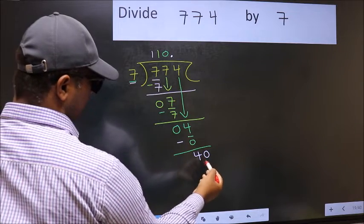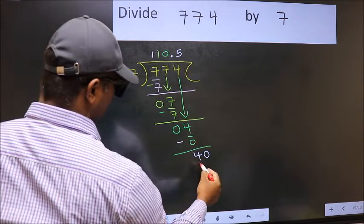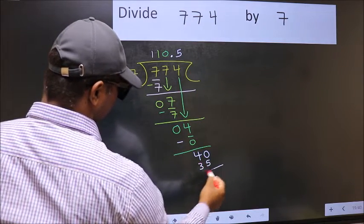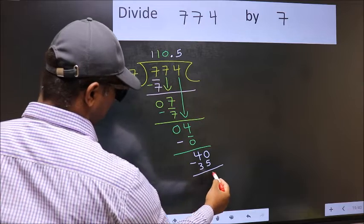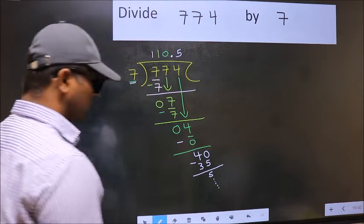So 40. A number close to 40 in the 7 table is 7 times 5 is 35. Now you should subtract. You get 5. And continue the division. I am not doing that.